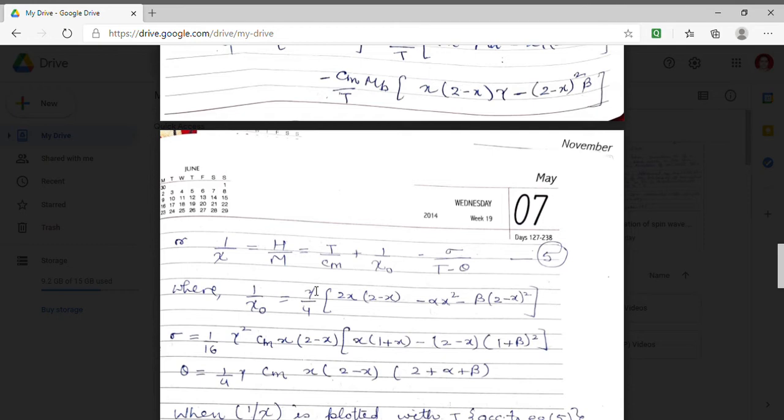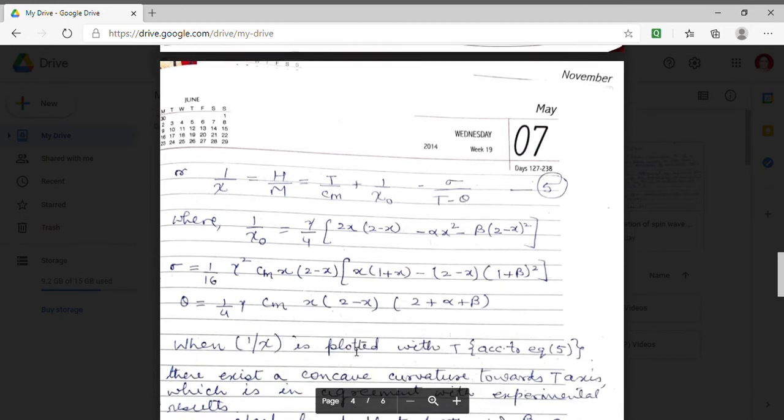Here 1 by Chi 0 is expressed by this expression. Sigma and theta are also expressed. These are constant parameters. So from here we can see that susceptibility is a function of temperature. And when we plot 1 by Chi with T we find that there exists a concave curvature towards T axis. And the result obtained by this expression is in accordance with the experimental data.